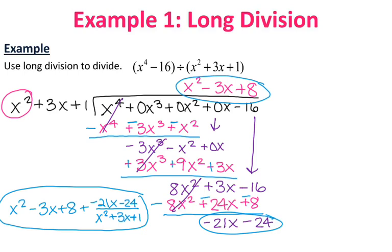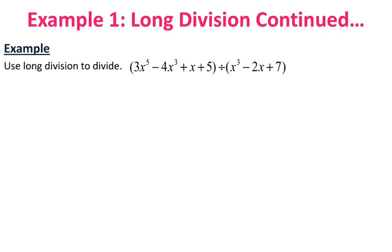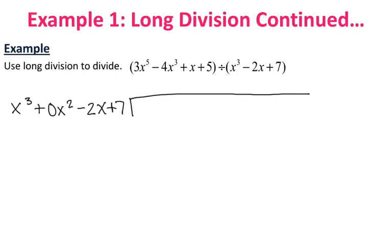Let's do another one. Long division is a bit tricky, but it's mostly about keeping track of all your terms. Sometimes you need to see it a couple of times to really understand the process. So for this example, I'm dividing x cubed minus 2x plus 7 — note I'm missing the x squared term, so I put in 0x squared as a placeholder — and it's dividing into 3x to the fifth, missing x to the fourth, minus 4x cubed, missing x squared, plus x, plus 5. Any time you're missing any terms, whether for the polynomial on the outside or inside, put in 0 as a placeholder.